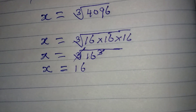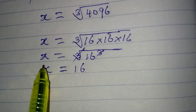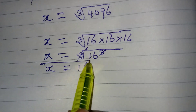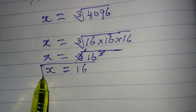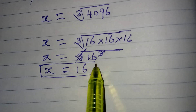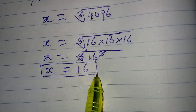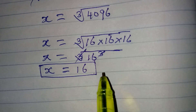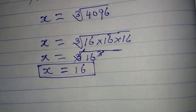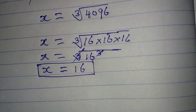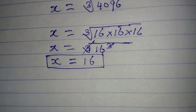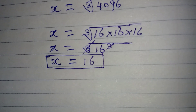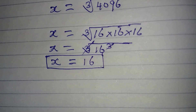Both methods give us x equal to 16. The question is: which of these methods is easier for you? Thank you for watching.